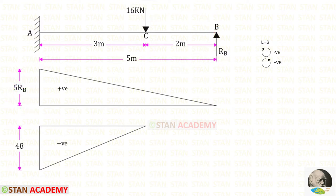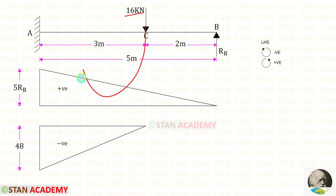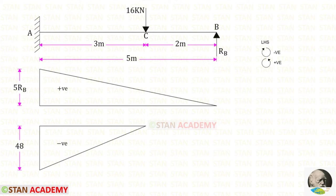Since it is positive, we draw the diagram above the line. Now for the bending moment diagram due to the load of 16 kN: this load acts in the clockwise direction, so it is negative, and the distance is 3. 16 × 3 = 48. Since it is negative, we draw the diagram below the line.